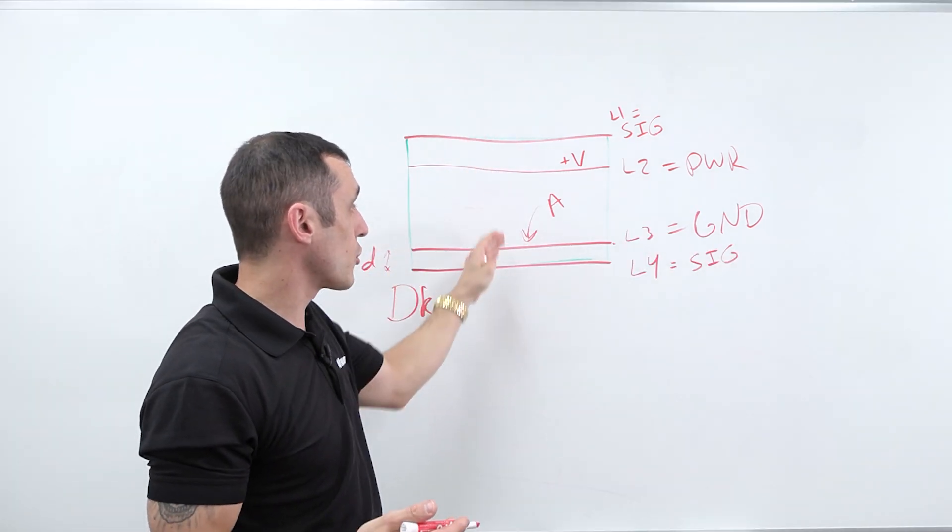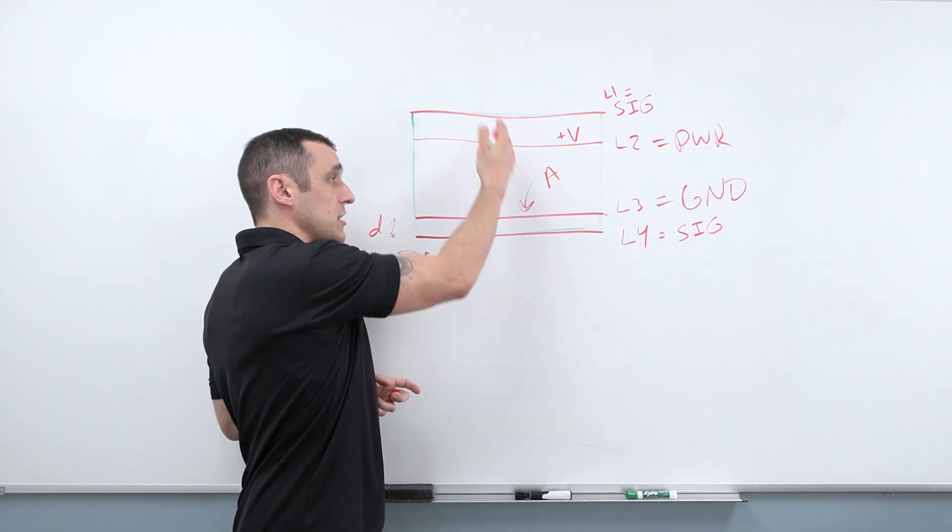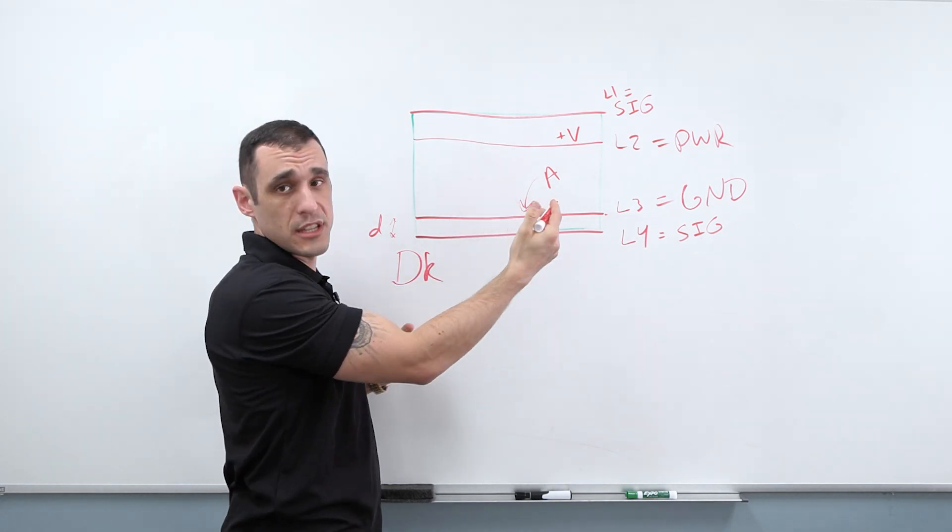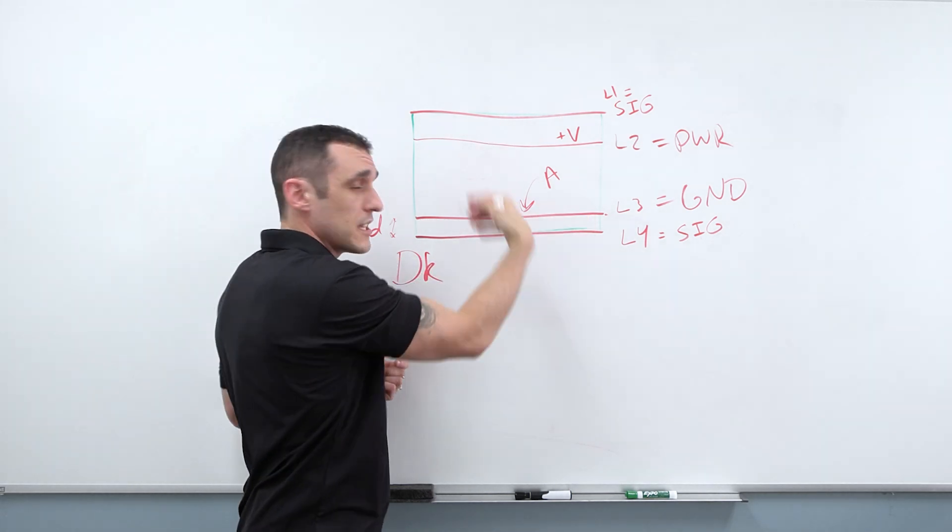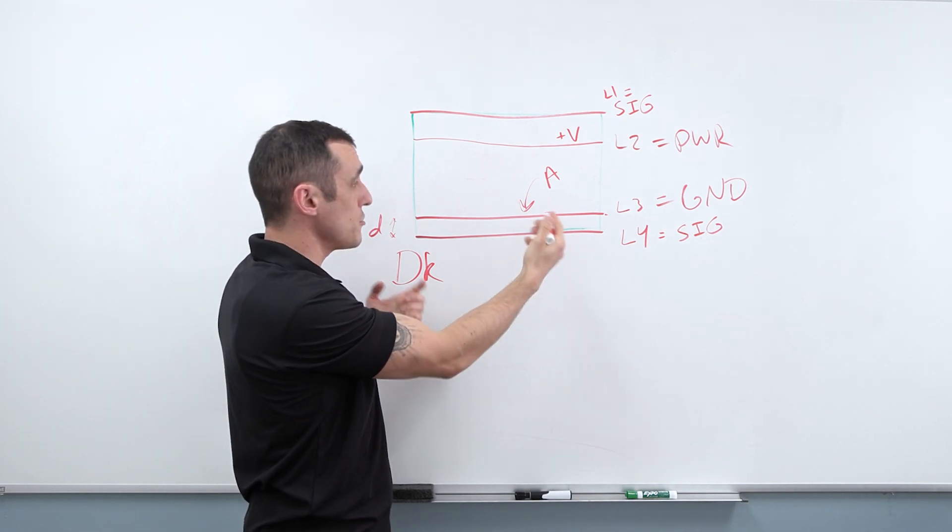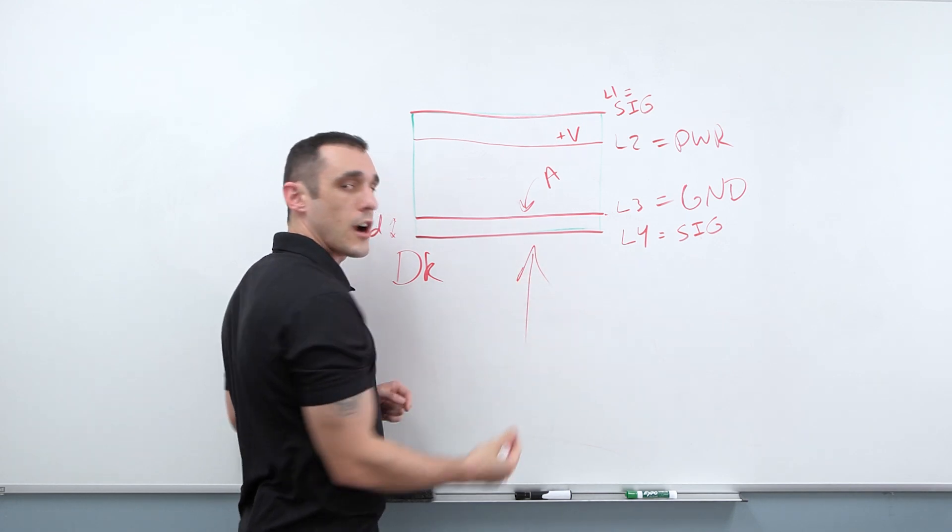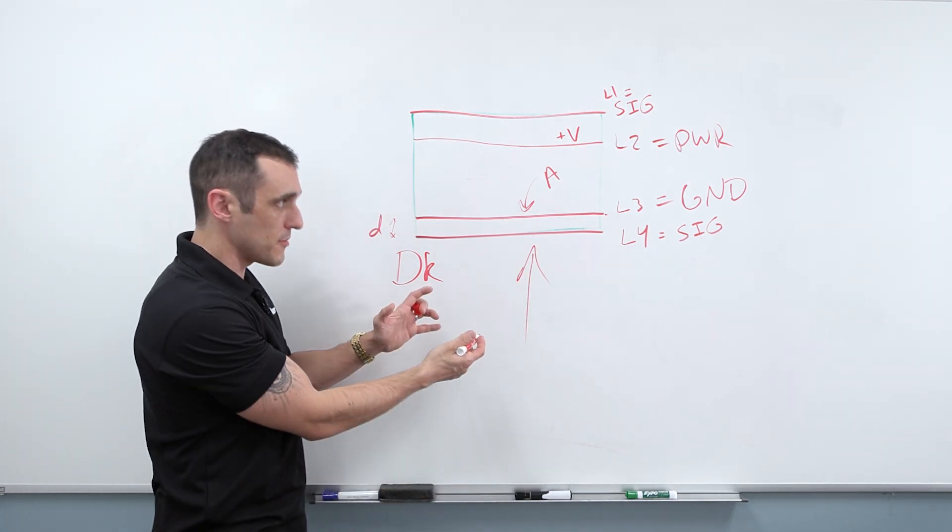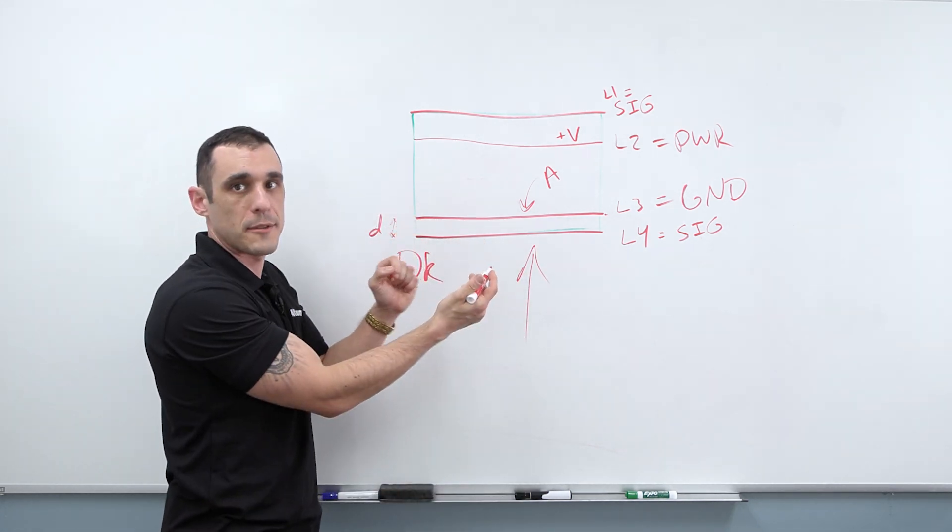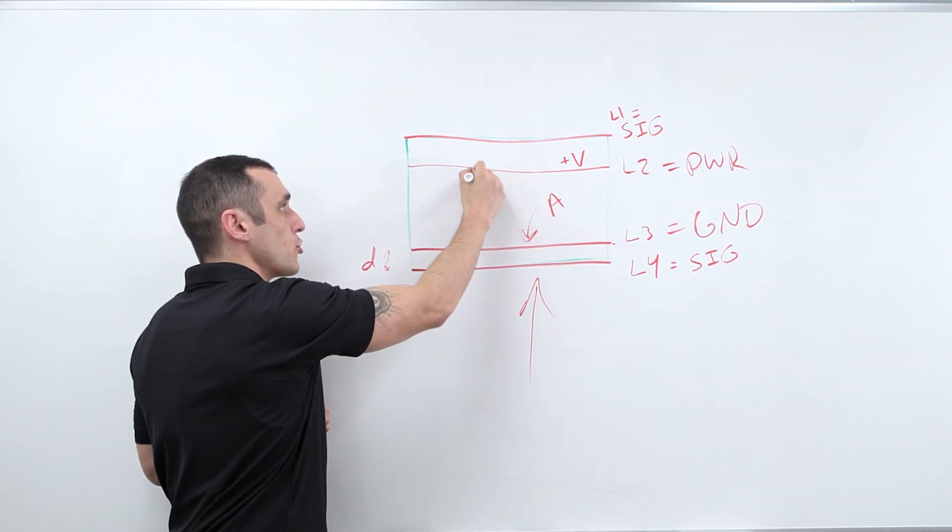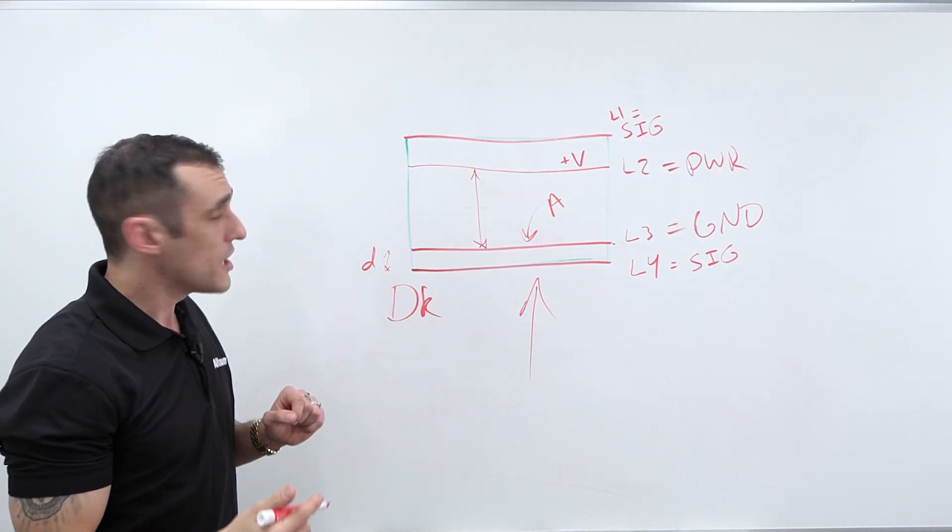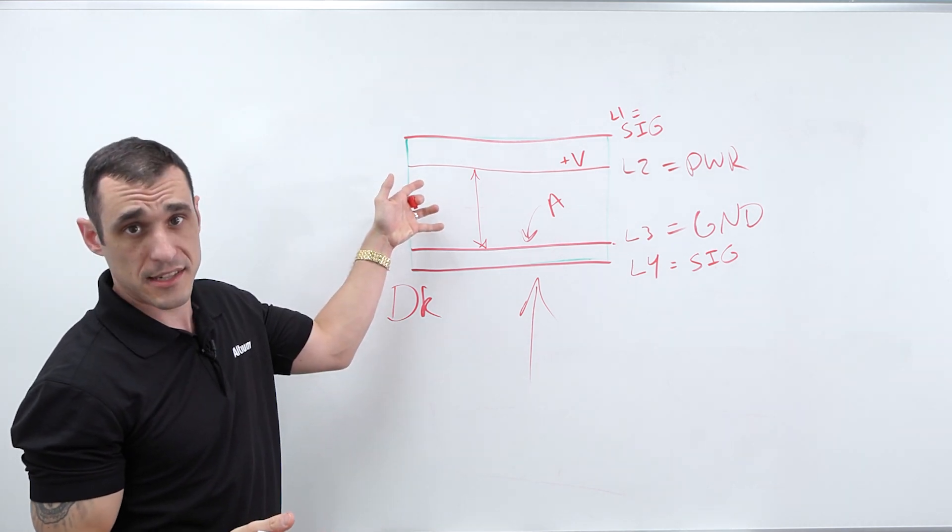We've talked about in one of the earlier videos on four-layer stackups what happens if you try to route between these two layers. You have to maintain a ground connection across the stack-up, and the ground connection is important, especially when you're dealing with high-speed signals. Generally, in this type of arrangement, if you were to use this board for high-speed signaling, you would try and stick all of your high-speed stuff on this bottom layer near the ground plane. And then here, between these two planes, you would have some plane capacitance.